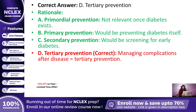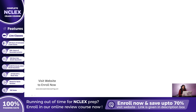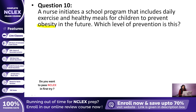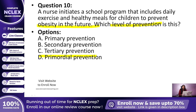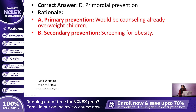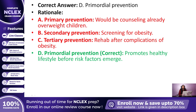Question 10: A nurse initiates a school program that includes daily exercise and healthy meals for children to prevent obesity later in life. Which level of prevention is this? The correct answer is D — Primordial prevention. This is because the intervention prevents the emergence of risk factors like obesity before they even occur, by shaping healthy behaviors in children.